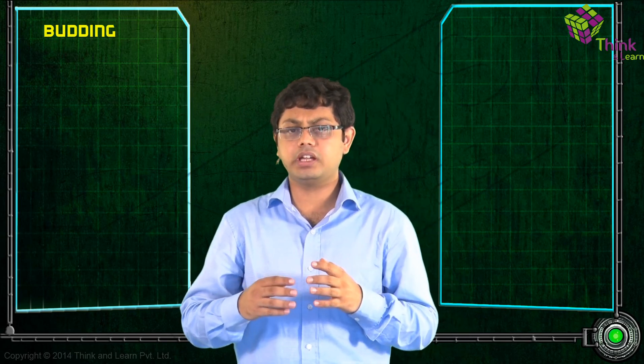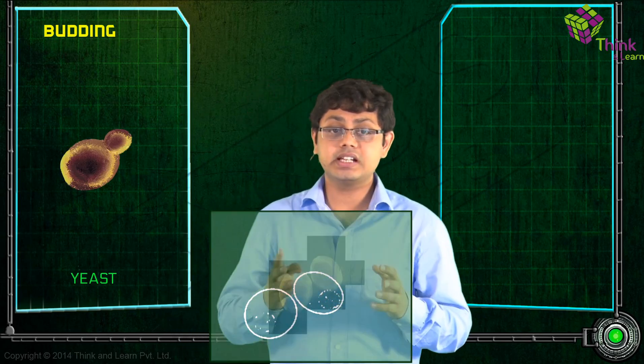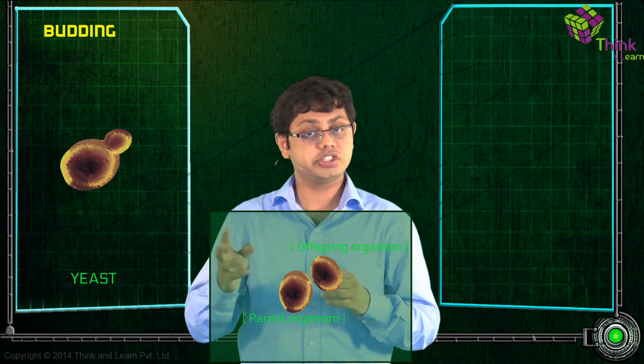Some cells split via budding, for example, yeast, resulting in a mother and daughter cell.